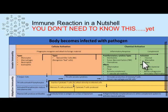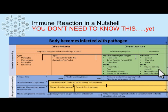Regarding the activation of complement: there are three different methods — the classical pathway, the alternative pathway, and the lectin pathway. This provides bacterial immunity, attracts more phagocytes to the site of infection, and stimulates inflammation.